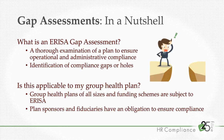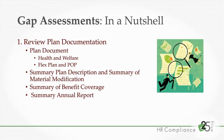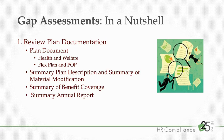I've broken down the GAP assessment into five key areas of focus that can be approached either at different intervals or all at one time — whatever works best for you. Step one is to review plan documentation. This requires you to track down all plan documents to ensure they're accurate, reflect current information, and to make any necessary updates. The first document you'll want is the formal plan document itself — for your health and welfare plan, and also for any FLEX plan, POP plan, or HRA you may have in place.